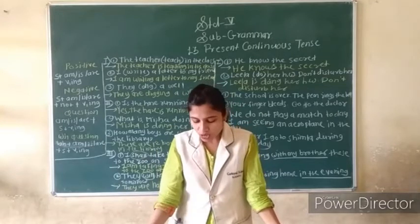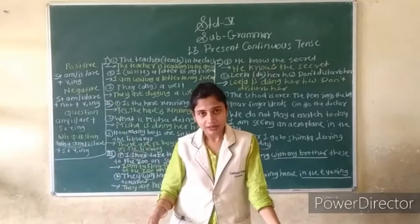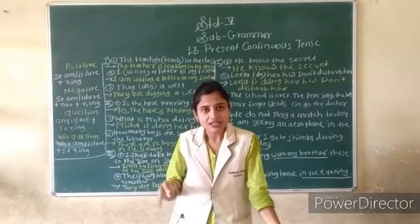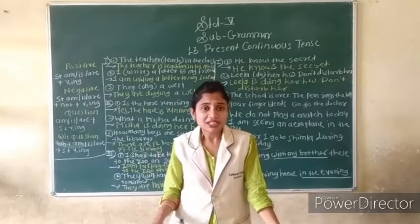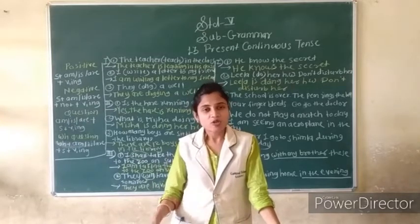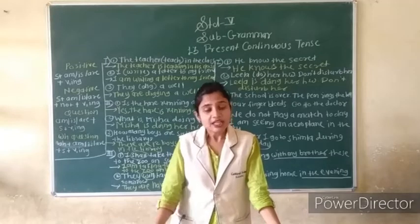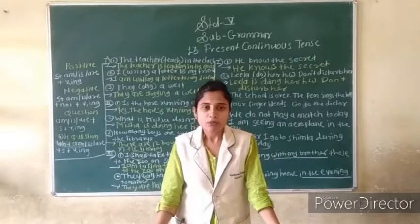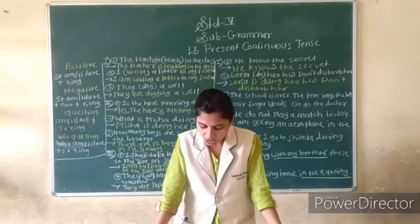Sixth: He usually drinks coffee, but today he is drinking tea. 'Usually drinks' is permanent — simple present. 'Today drinking tea' is temporary — present continuous. He usually drinks coffee, but today he is drinking tea. Like this you can use it.